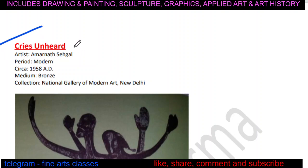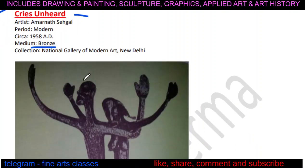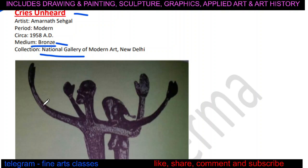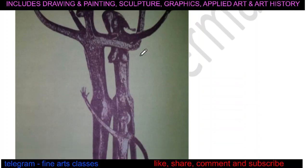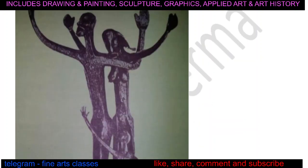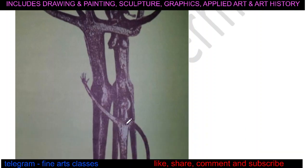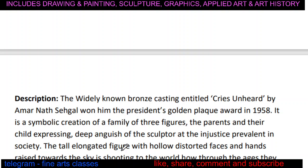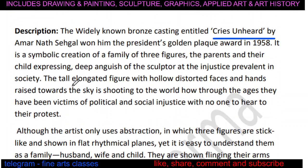The third sculpture is Cries Unheard, by artist Amarnath Sehgal, modern period, 1958 AD. The medium is bronze. Note that all these sculptures have different mediums — remember that each one differs, just as in the last term all paintings had different techniques like watercolor and tempera. This sculpture shows stick-like figures — three figures, possibly a family: husband, wife, and child — with their arms waving in the air.